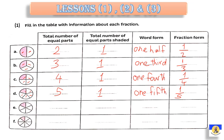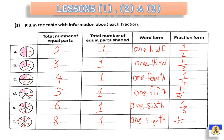Letter E: how many parts here? Yes, 1, 2, 3, 4, 5, 6. Excellent. So, it will be 1 sixth. The next one: how many parts here? 1, 2, 3, 4, 5, 6, 7, 8 parts. So, one part only shaded. So, it's called 1 eighth — 1 over 8.